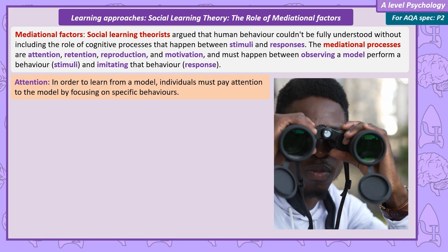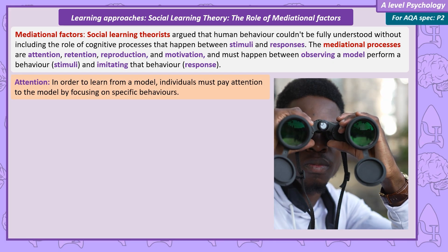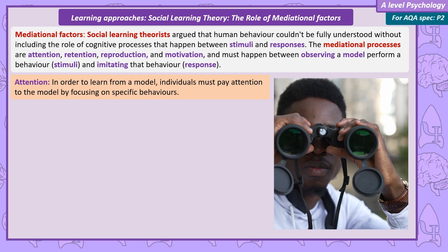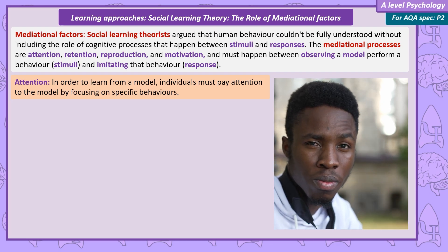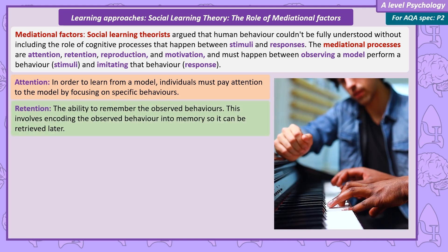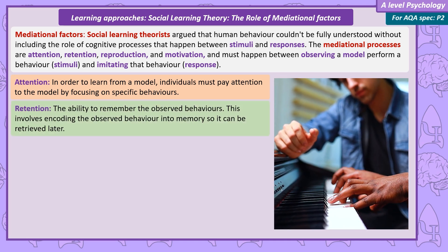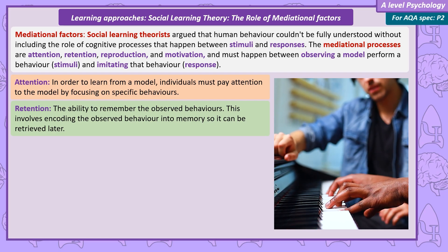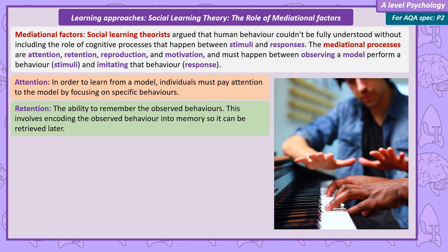Attention: in order to reproduce a behavior, when that behavior was first being demonstrated, you must have watched carefully and paid full attention to what was done and how it was done. Retention: this is memory. If you paid attention but then forgot what you'd seen, then clearly you're not going to be able to reproduce the behavior. So there must be a memory of that behavior retained in the mind.